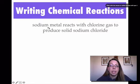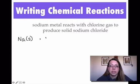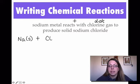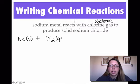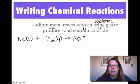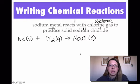Sodium metal is just pure sodium — Na — and since they're telling me it's a metal, I'm going to put an S after it. 'Reacts with' is your plus sign. Chlorine gas is one of your diatomics, so when they say chlorine gas, they really mean Cl2, and I'm going to put the G after it to show it's a gas. 'Produce' is your arrow. Solid sodium chloride — this is ionic: sodium is +1, chlorine is −1, so it's just NaCl, and it was a solid. So this is what my chemical reaction would look like written from words into formulas.